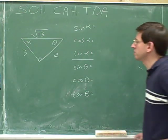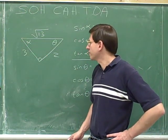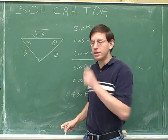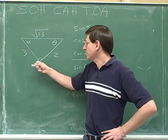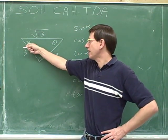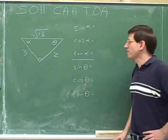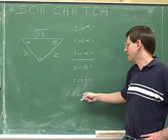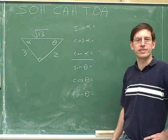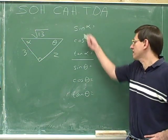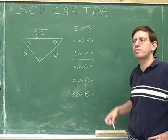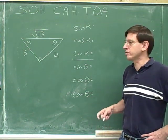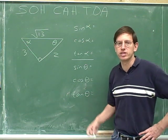Here's another problem — a new triangle. This triangle has legs of length 2 and 3 and a hypotenuse of the square root of 13. Here's the right angle; this angle is alpha and this angle is theta. Let's find the sine of alpha, the cosine of alpha, the tangent of alpha, the sine of theta, the cosine of theta, and the tangent of theta — six different questions. Please pause the video and try to answer all six, and if this material is giving you difficulty, use the same notation we've been using.